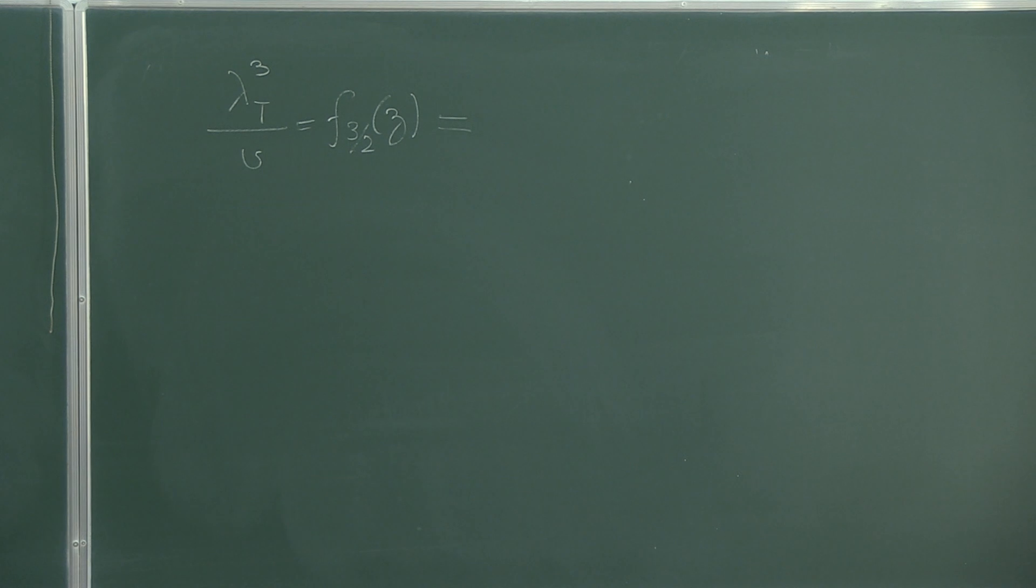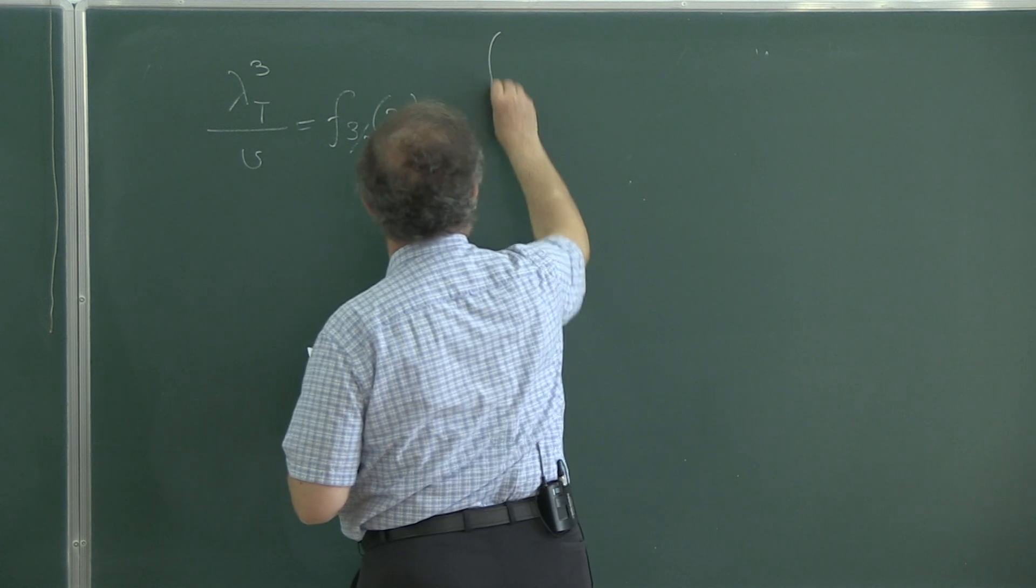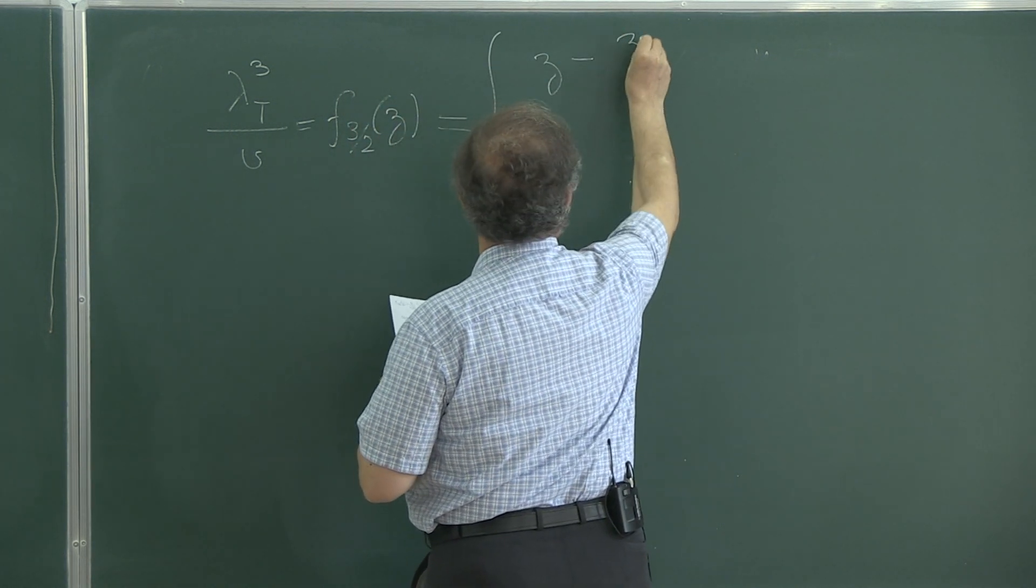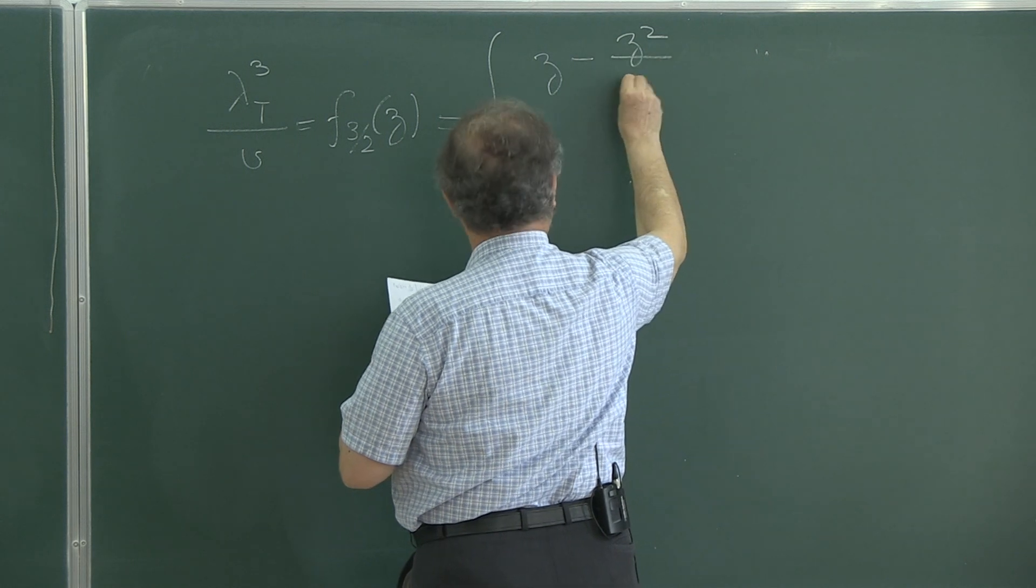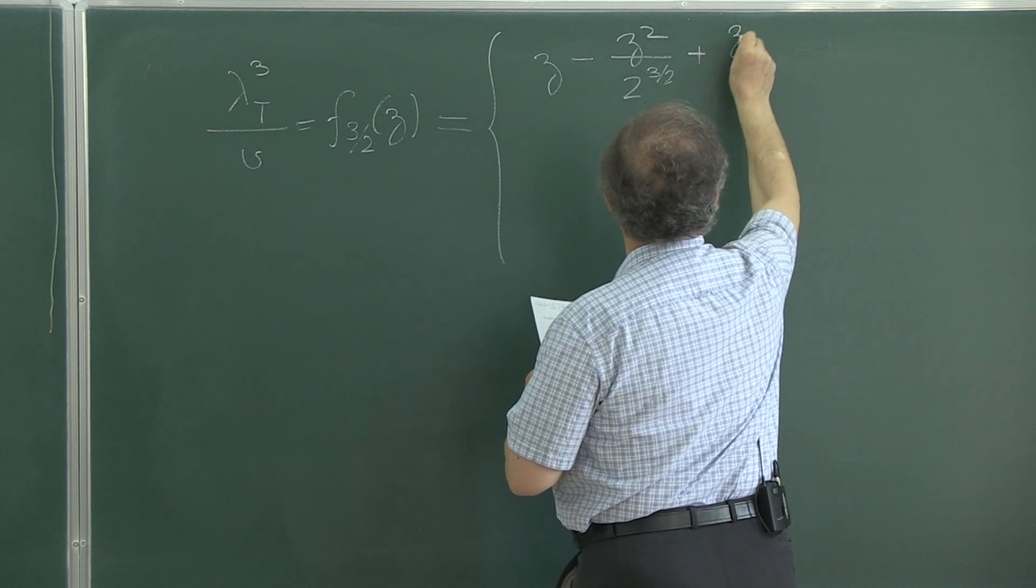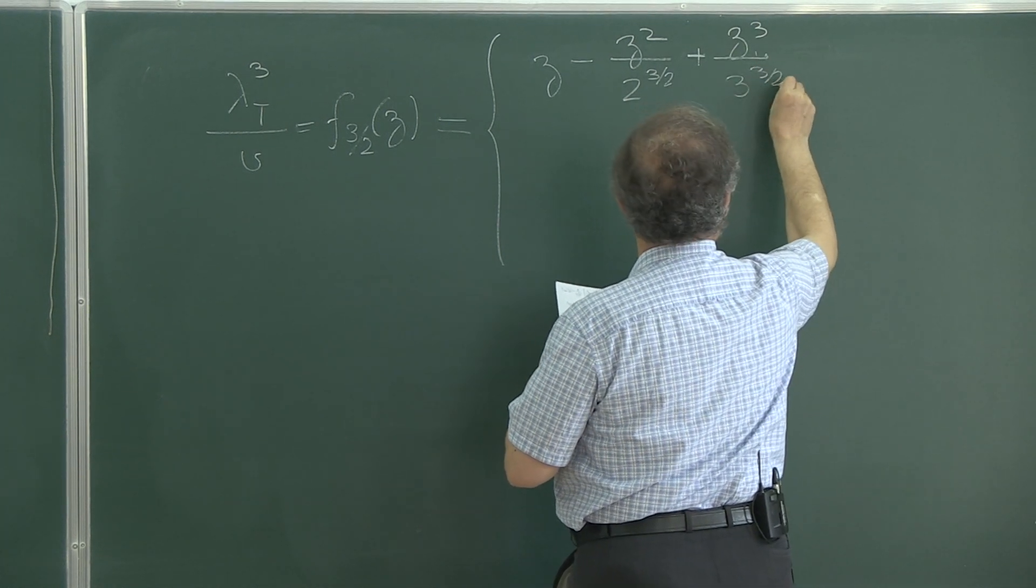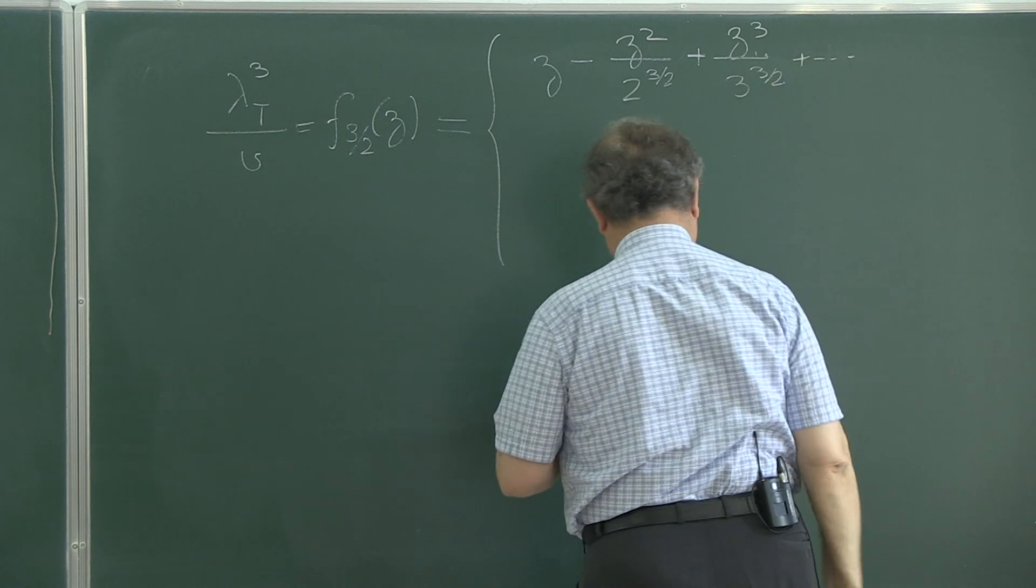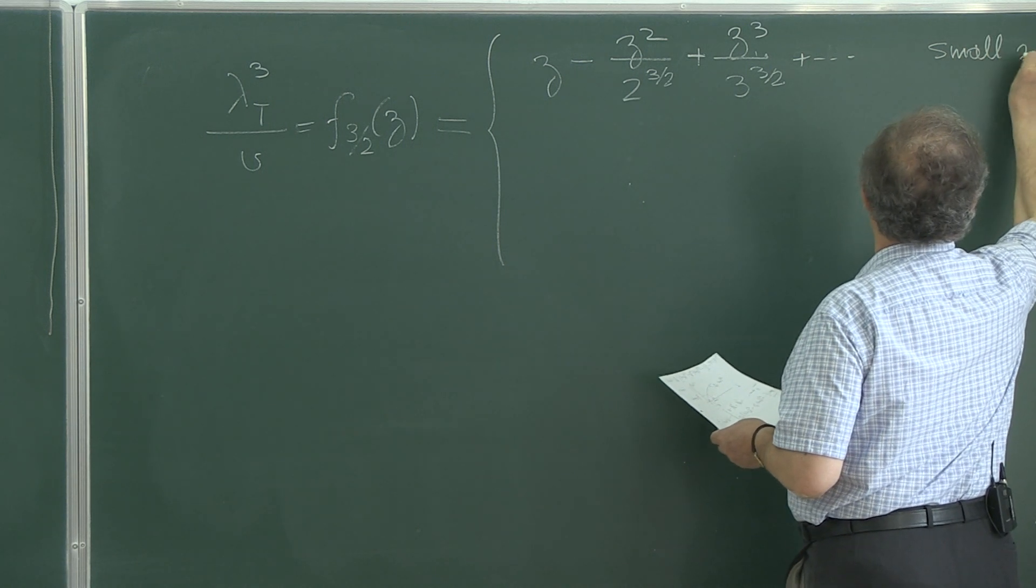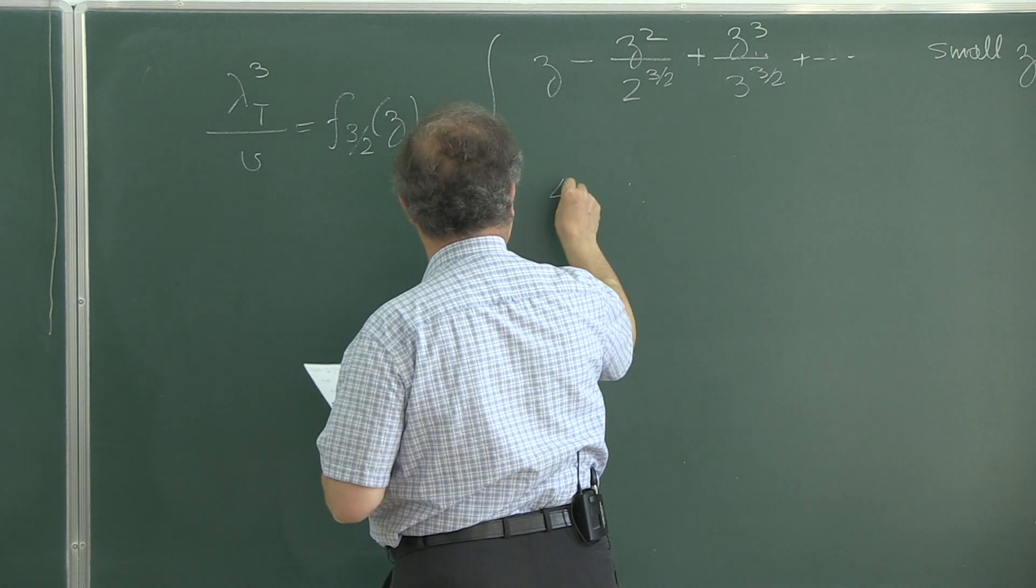So that's the limiting forms. Let's see, the z minus z squared, 2 thirds, 3 thirds. This is small z limit, and here is the large z limit.